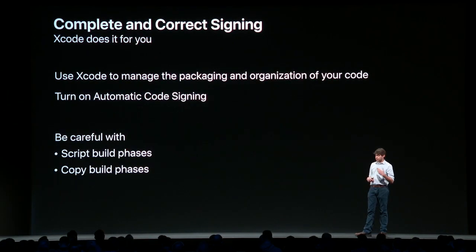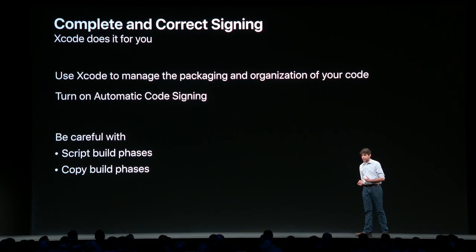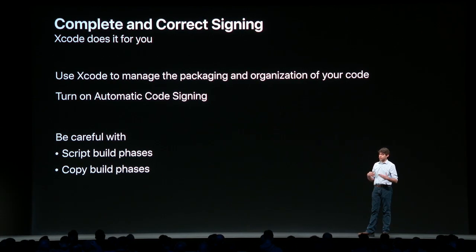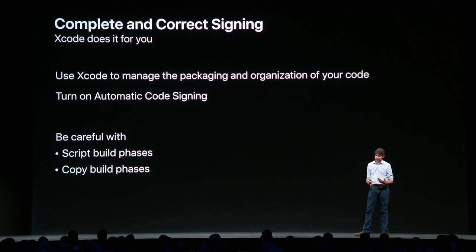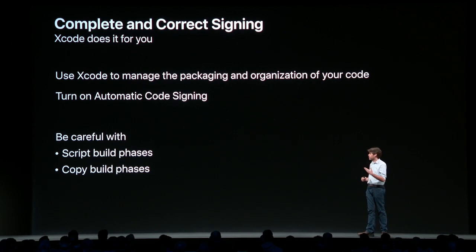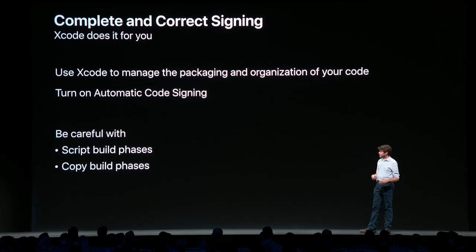If you're using Xcode to build your software, this is easy — if you turn on automatic code signing, Xcode does all of this for you. But be careful: if you use script build phases or copy build phases, those might be introducing new code into your software that Xcode doesn't know about, and you have to make sure those get correctly signed.